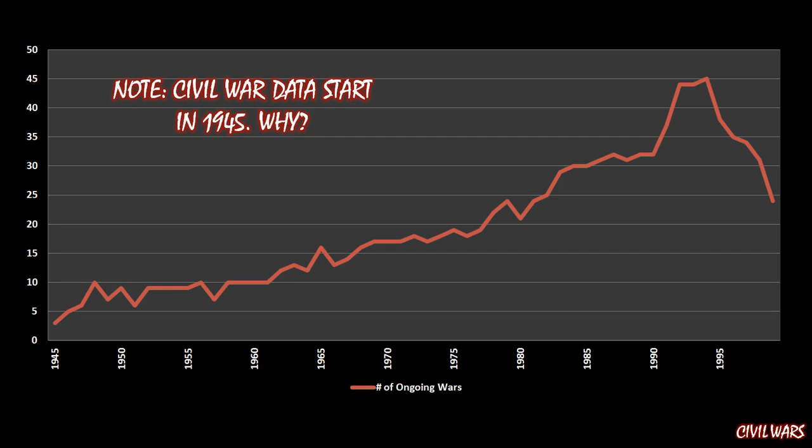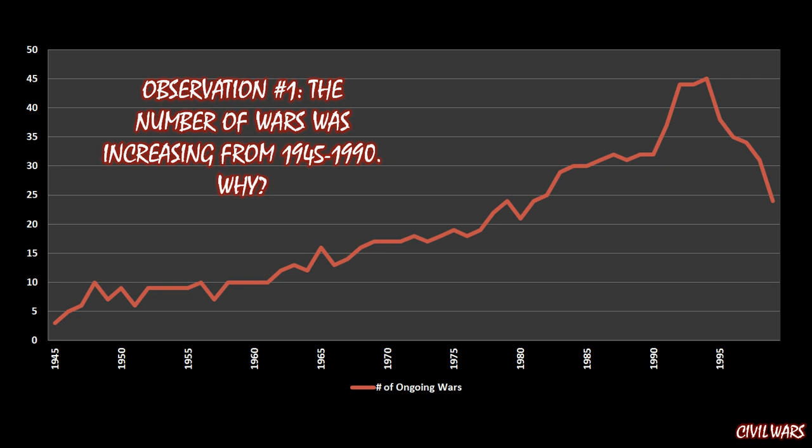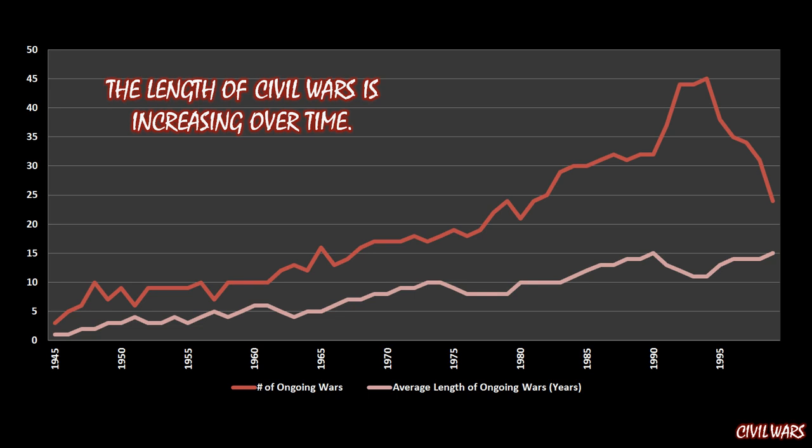So what about those observations? The first observation, and probably the most obvious thing going on in this graph, is that the number of wars was increasing from 1945 to 1990. We start out at about three wars in 1945, peak at about 30 around 1990, and then immediately following 1990 we get all the way up to about 45. Now, your first inclination might be that there are simply more wars starting over that time — but that's not the case. The reason the number of ongoing wars increases is that the length of civil wars is increasing. At 1945, the average ongoing war length was about a year, but by 1990 we're looking at a 15-year average. Think about how long that is — that's an extremely long war.